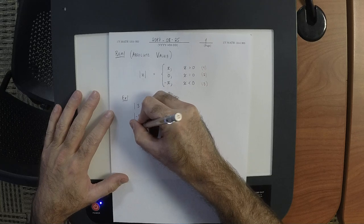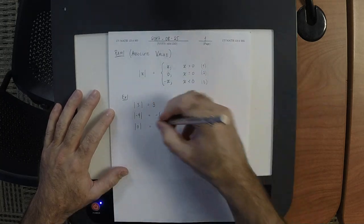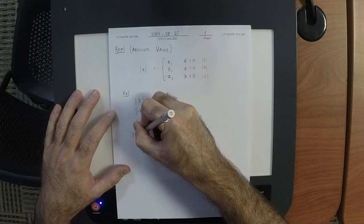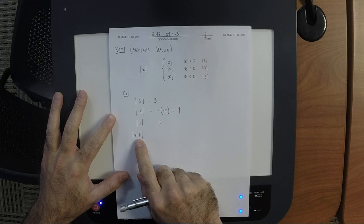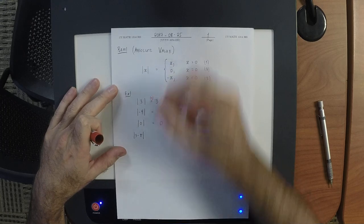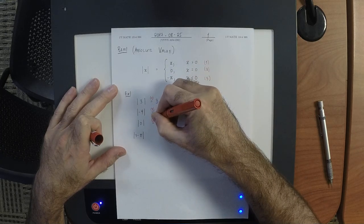What's the absolute value of zero? It's zero. Which clause did we use? The second clause. Now how about something slightly more interesting — what's the absolute value of 3 minus π? I don't want a decimal approximation; I want the exact value. Pi minus 3. To evaluate this we have to use clause one for |3|, clause three for |-4|, clause two for |0|, and for this one we use clause three.